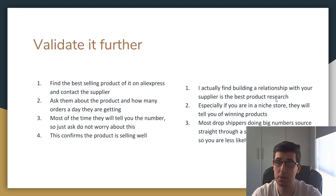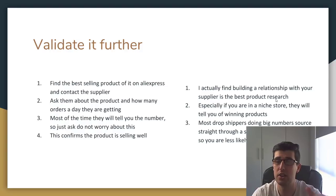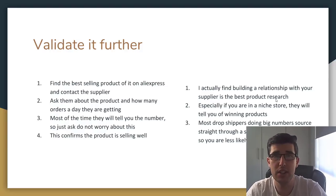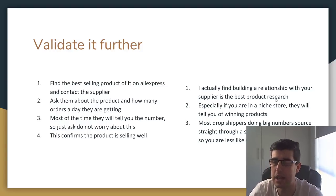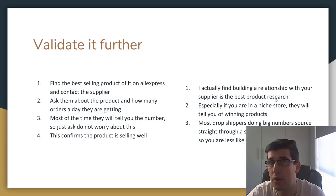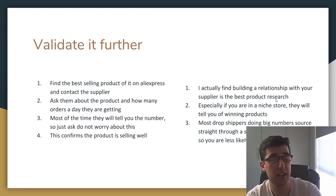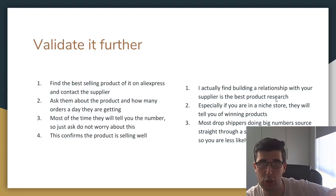Most drop shippers doing big numbers source straight through a sourcing manager, which you can find on Upwork for around $20-25 an hour, or through a factory directly. So you're less likely to see their products on Aliexpress or Alibaba. That's why you want to speak to your supplier, because your supplier has contacts to these actual factories and they network too. They might tell you of a product that's unknown but actually doing really well somewhere in the world. It really just comes down to asking a simple question - they ship the product, so they know what's selling best.